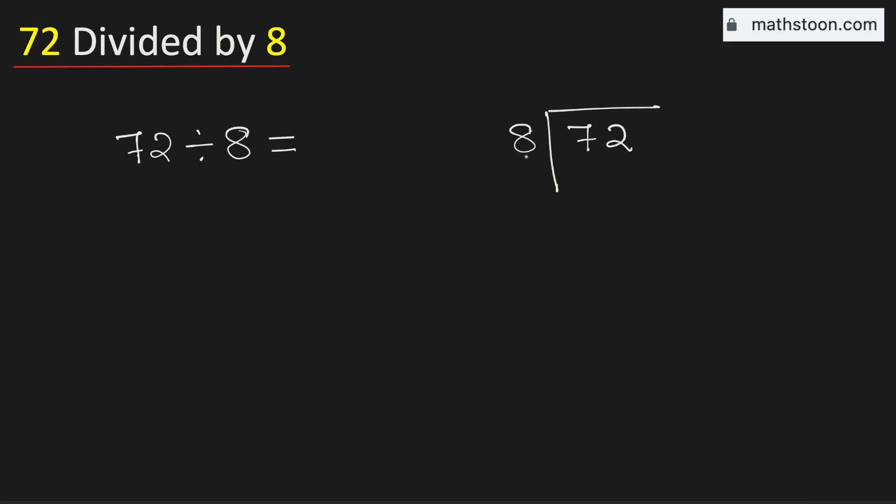From the multiplication table of 8 we know that 8 times 9 is equal to 72. Subtract, we get 0.